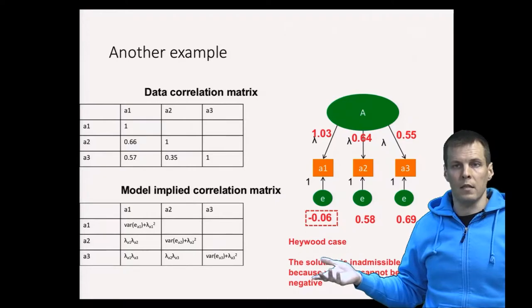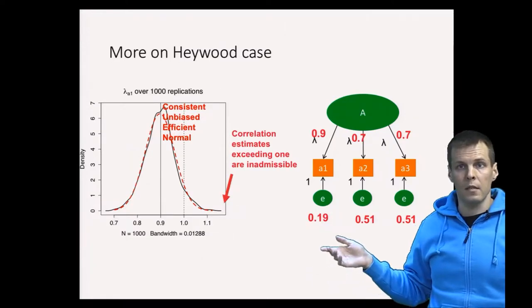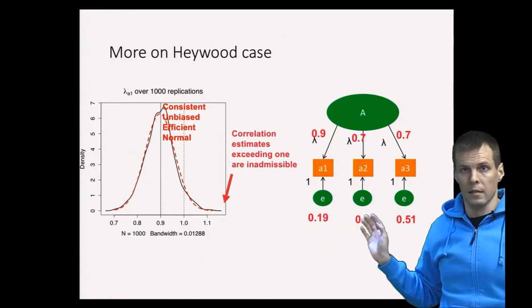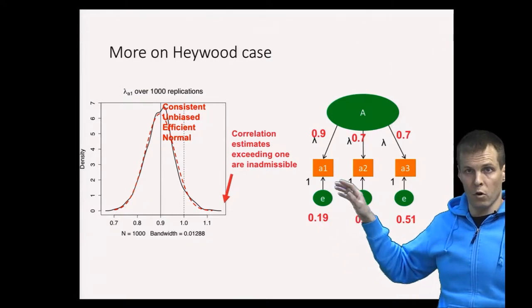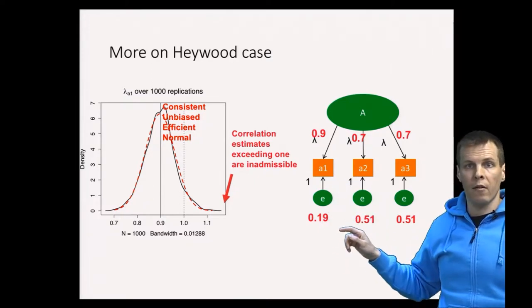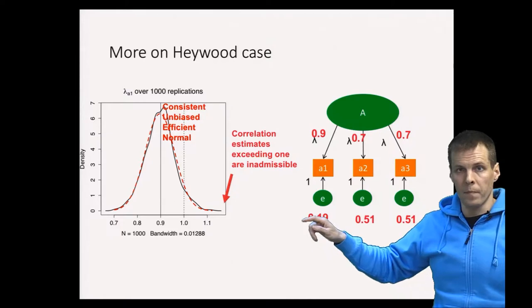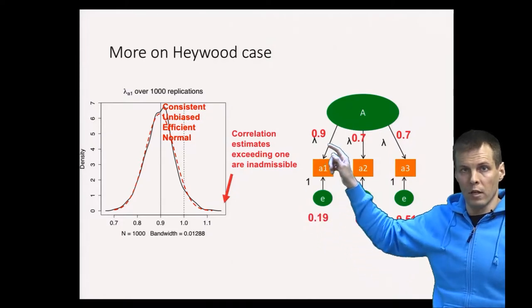The reason for that is that if we repeat this, this is simulated data set. If we repeat the estimation of this factor model over and over the real error variance is 0.19 and the real factor loading is 0.9.